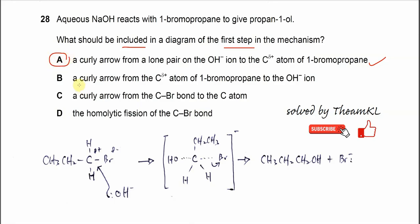B cannot be the answer - the arrow from the partial positive carbon is wrong. A curly arrow from the C-Br bond is also not possible; it must be the lone pair on the hydroxide. The homolytic fission of the C-Br bond? No, this is later and it's a heterolytic fission. The C-Br bond breaks and this pair of electrons moves to the bromine.